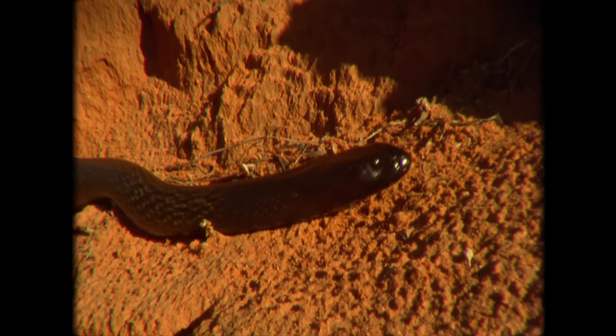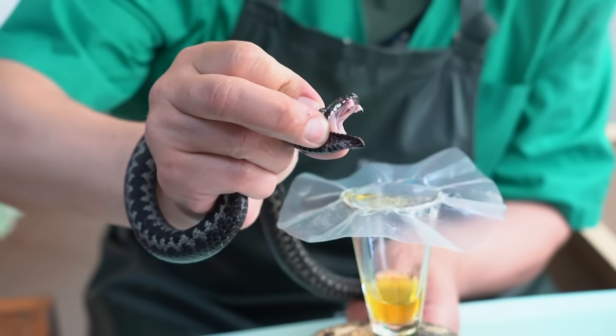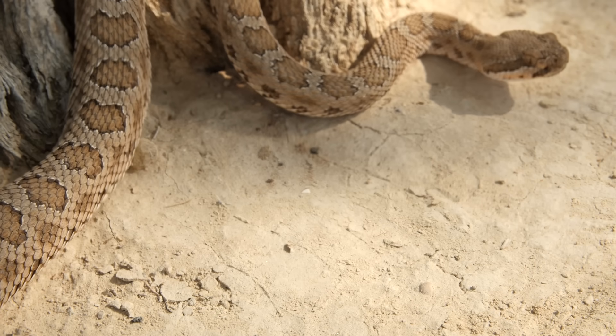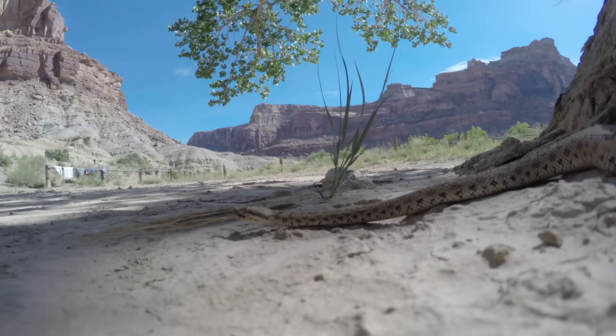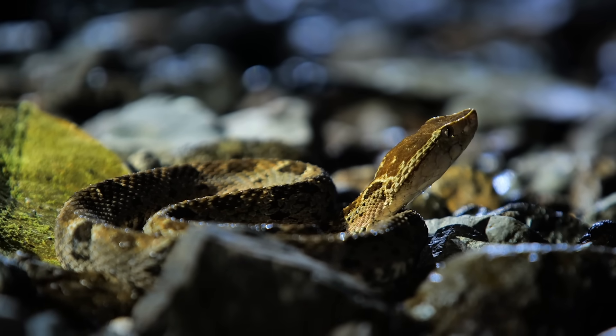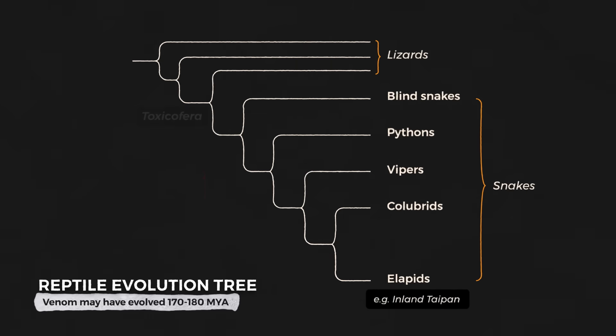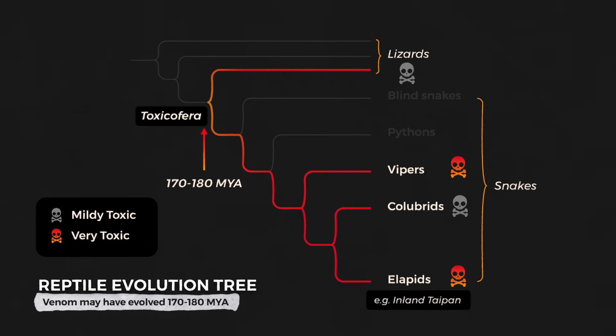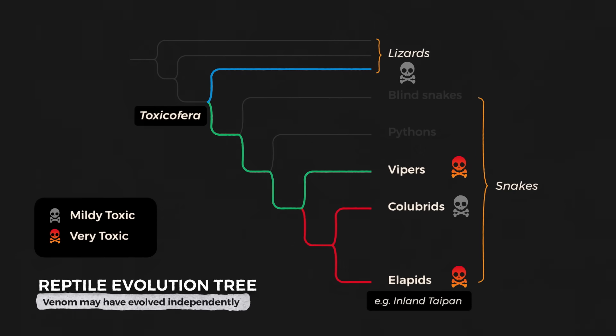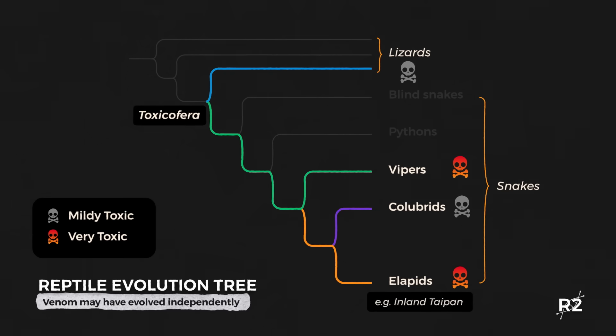To understand why the inland taipan is so deadly, we first need to understand where venom emerged in the evolutionary tree. Like so many hunting and feeding traits in animals, venom in snakes appeared due to dramatic changes in geography and habitat over millions of years. It's not clear exactly when and how venom appeared in snakes. It could have either come from a single origin around 170 million years ago, leading to toxicity in the venom of many diverse reptile species, or it could have evolved independently across multiple lineages. So we might not know exactly when it evolved, but it's generally understood why it evolved.